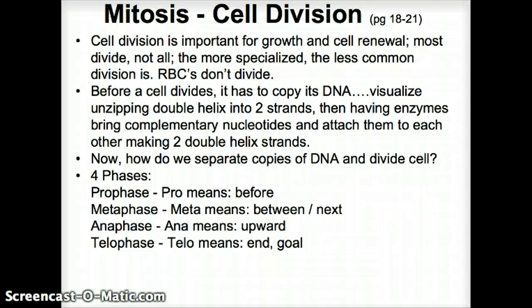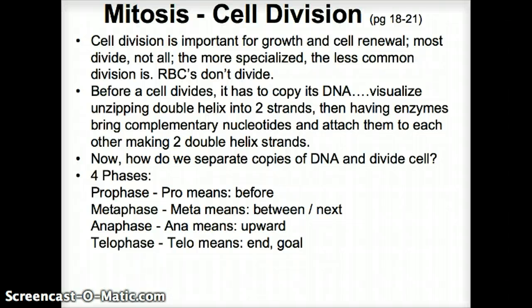Prior to cell division, we need to assure that the genetic material is going to be in both daughter cells, so we have to make a copy of the DNA. Visualize a double helix, with an enzyme coming in and unzipping it, making two single strands, and then bringing complementary base pair nucleotides to make two double strands again. So we have two double helixes with the genetic material copied — it's twice the same copy.